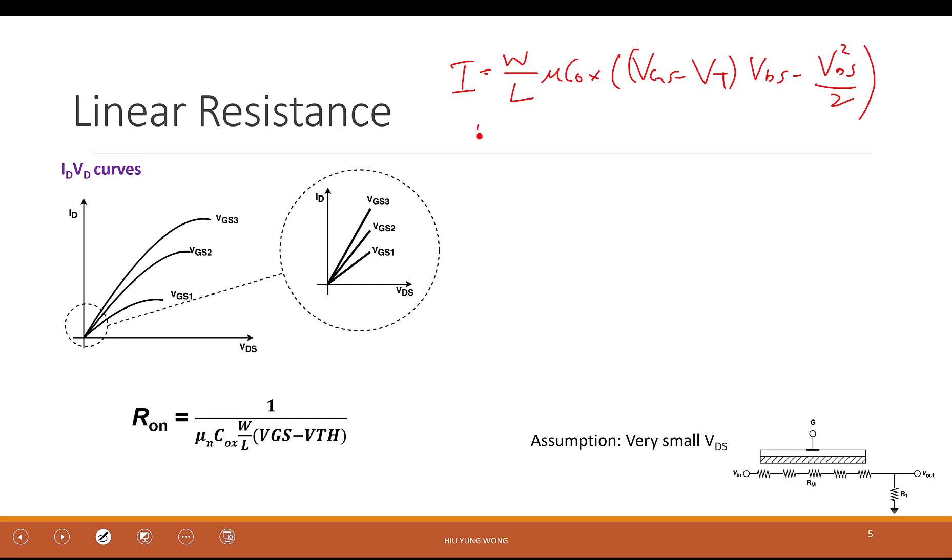Now, when the Vds is small, for example, it is 0.1 volt, what happened to Vds squared? It becomes 0.01 volt squared, even smaller. So when you have a small Vds, we can ignore the quadratic term.